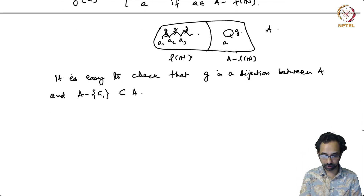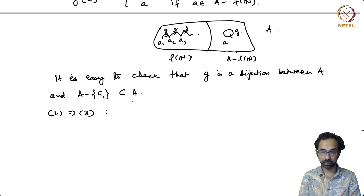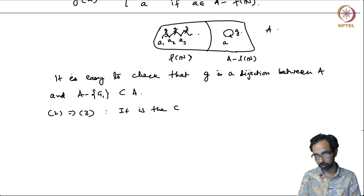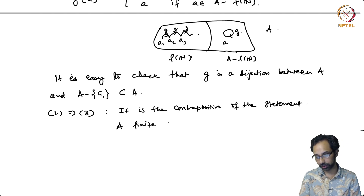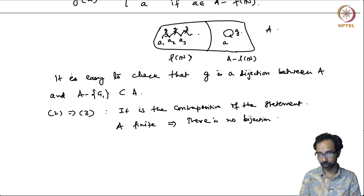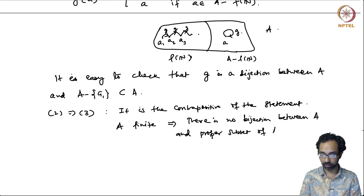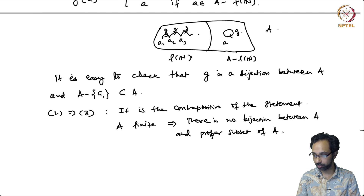For 2 implies 3: if there is a bijection between A and a proper subset, then A is infinite. This is just the contrapositive of the statement we already proved: that if A is finite, then there is no bijection between A and a proper subset of A. So 2 implies 3 is immediate.